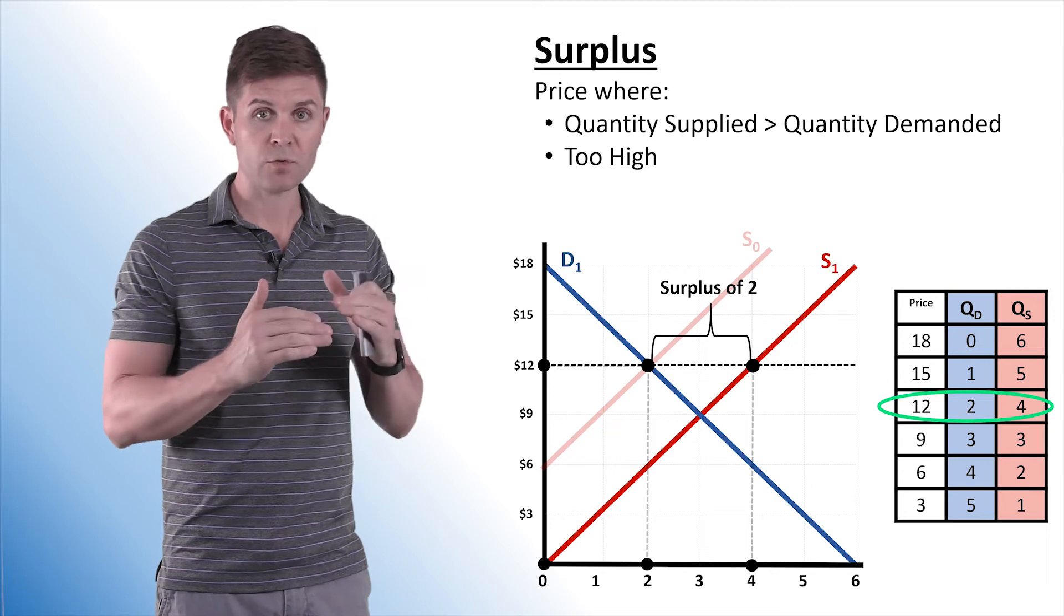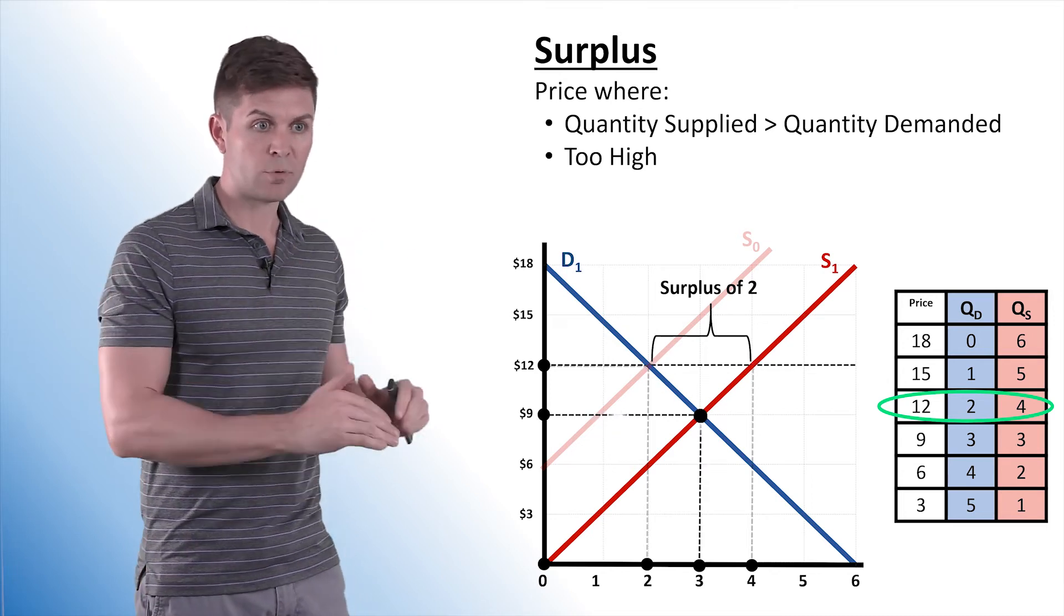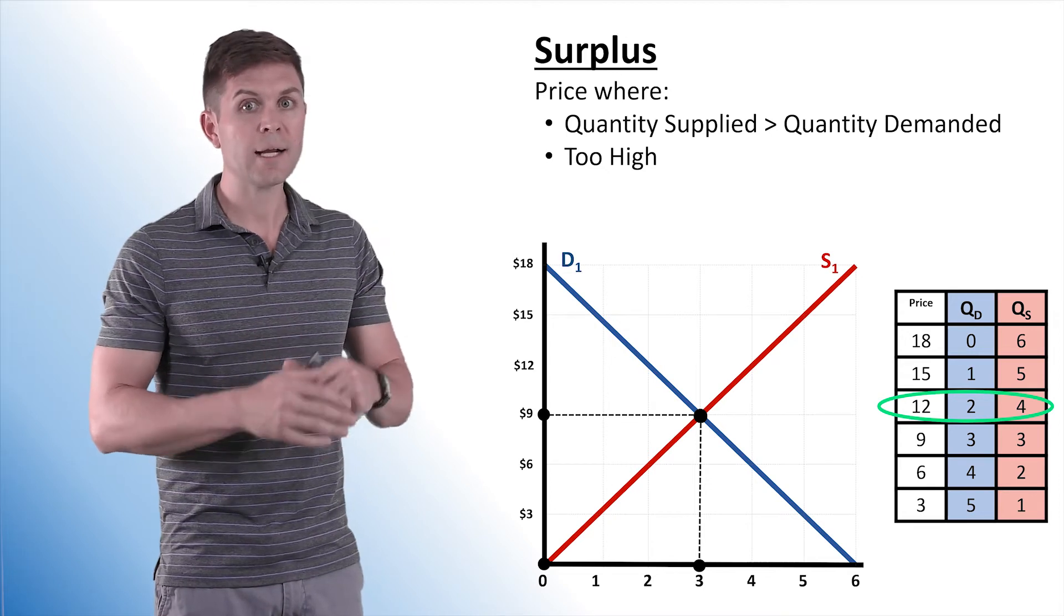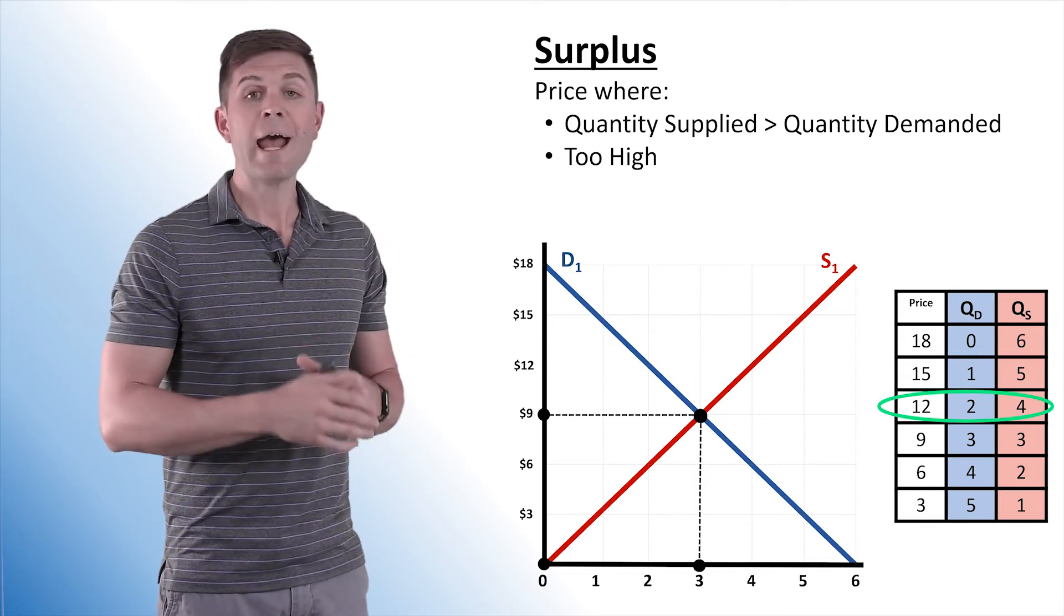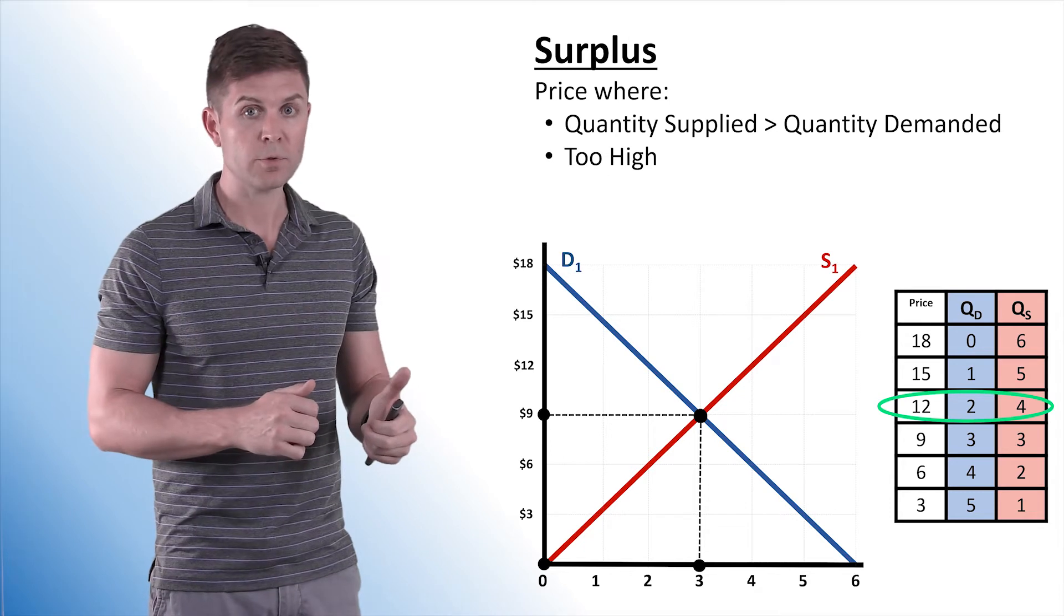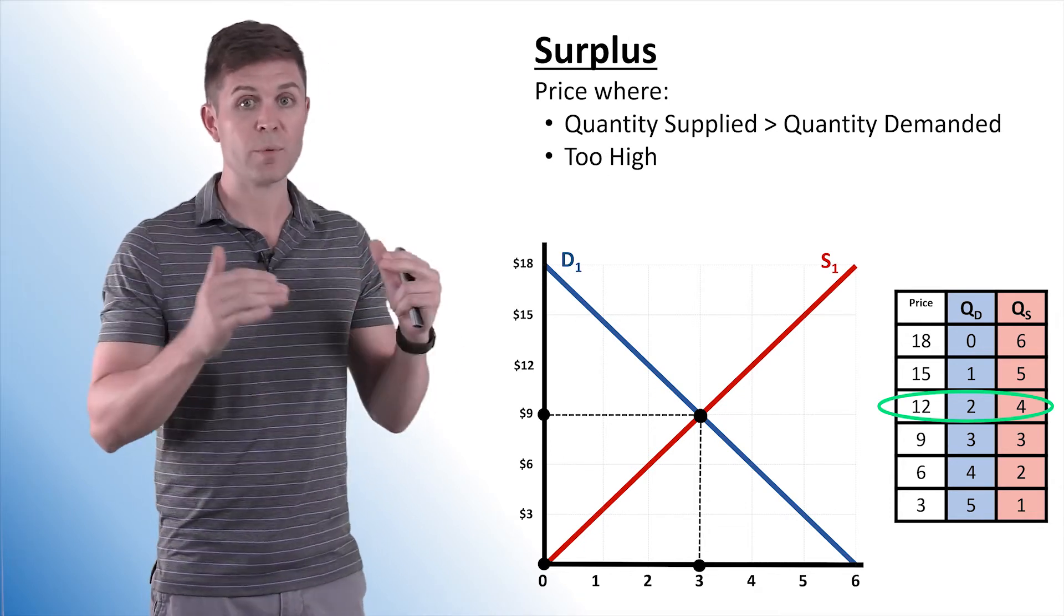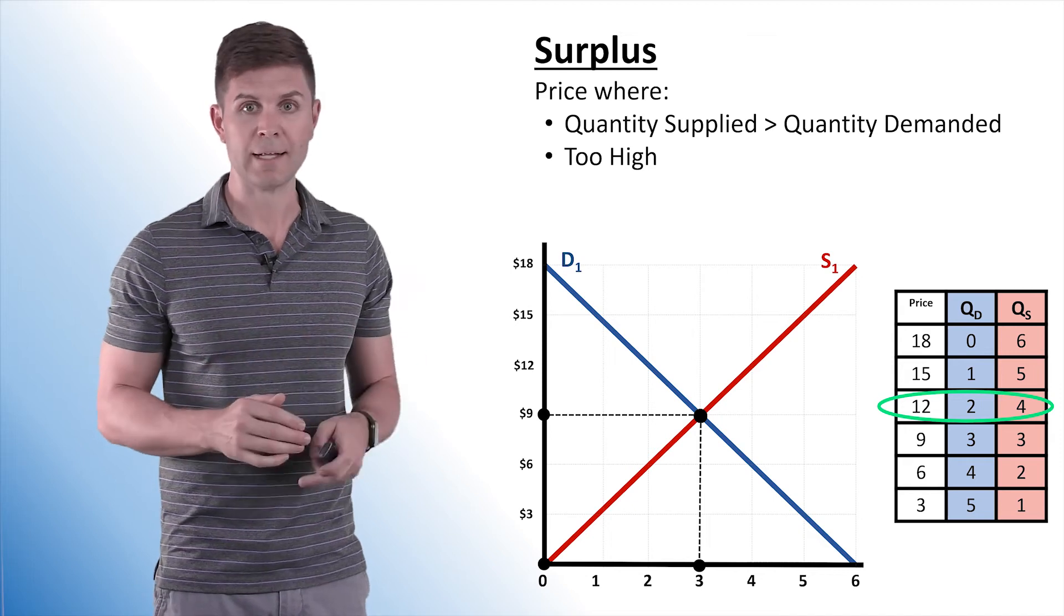Now, eventually, as markets will adjust, price level will come down. The producers will say, we need to get rid of this extra product. Let's drop the prices a little bit. And that drop in price will sell to more consumers. And at the same time, we'll discourage producers from producing as much. And then we find our new equilibrium at $9 once again.